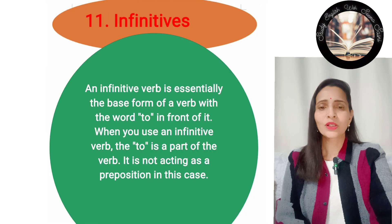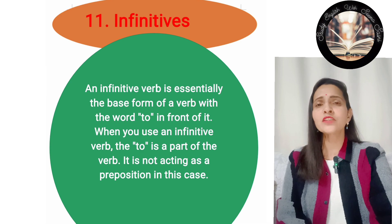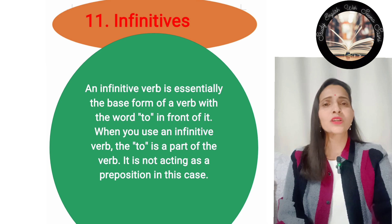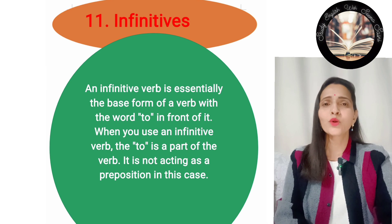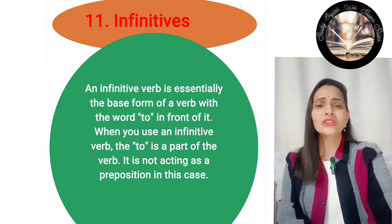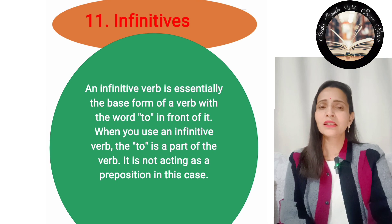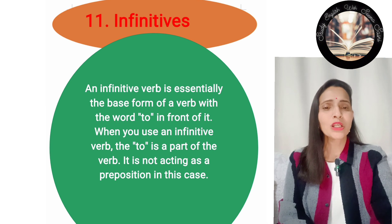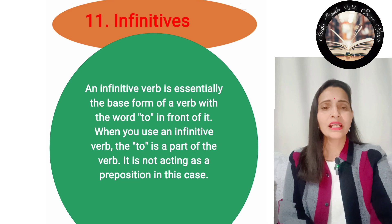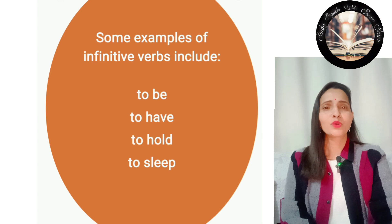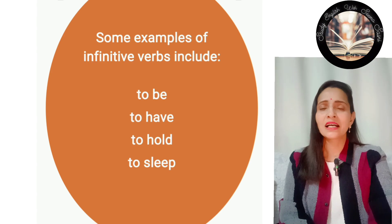Number 11: infinitives. An infinitive verb is essentially the base form of a verb with the word 'to' in front of it. The 'to' is a part of the verb and is not acting as a preposition in this case. Examples of infinitive verbs: to be, to have, to hold, to sleep.